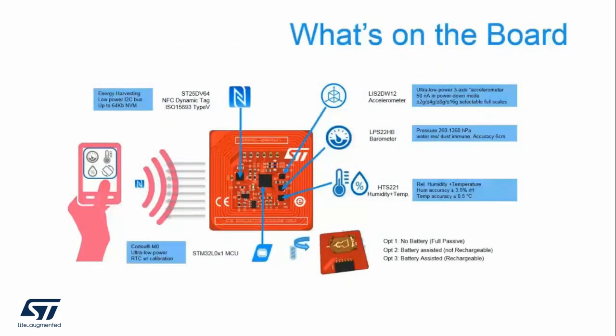Our current sensor tag design includes accelerometer, barometer, humidity, and temperature sensor. There is also a coin cell battery holder so that the sensor data can be logged over time. There are three modes in which the tag can operate. The first is no battery, or fully passive. In this mode, the tag is fully powered by the NFC reader RF field. It can relay sensor information as long as the RF field is present.